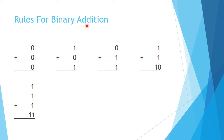The rules for binary addition state that 0 plus 0 is 0, 1 plus 0 is 1, 0 plus 1 is 1. A 1 plus 1 is 2, but in binary we represent 2 as 1, 0 — we keep the 0 and carry the 1. For 1 plus 1 plus 1, that's 3, which in binary is 1, 1 — we keep the 1 on the right and carry the 1 on the left.